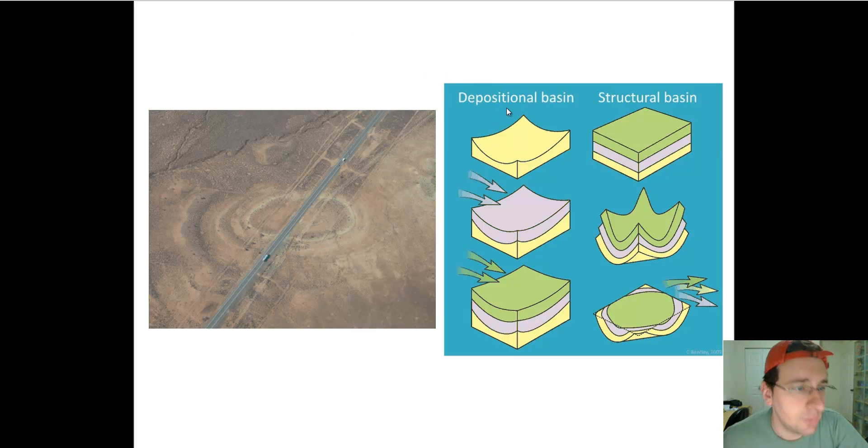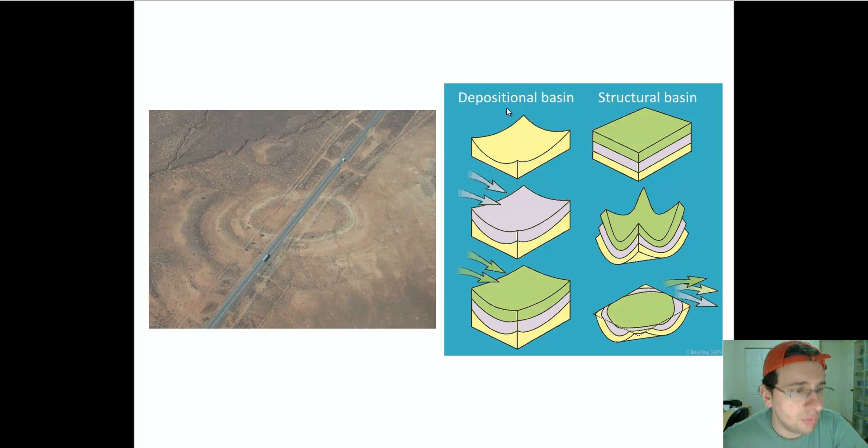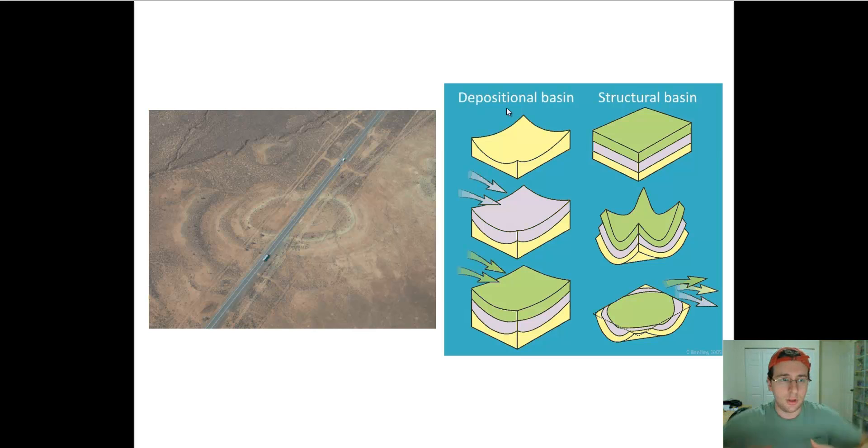There's basically two types. Depositional basins are formed when new material gets added to the surface, forcing the crust to fold inwards. And you have structural basins which form because of either folding or the magma cooling down underneath, forcing the crust to fold downwards.